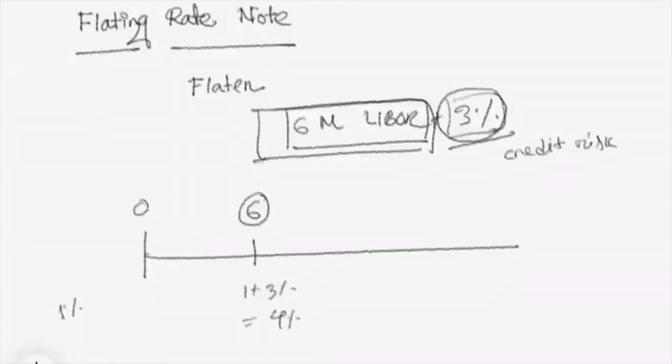On the reset day, we check if the six-month LIBOR rate has changed. If it changes to 1.2 percent, then at 12 months the coupon rate will be 1.2 percent plus 3 percent, which equals 4.2 percent. If LIBOR at month 12 is 0.8 percent, then at 18 months the coupon payment will be 0.8 percent plus 3 percent, equal to 3.8 percent.